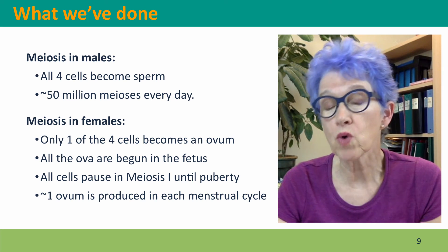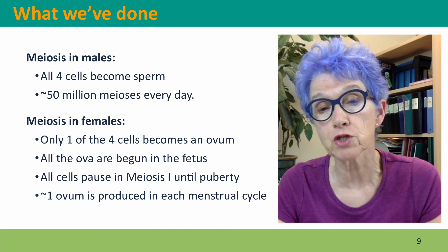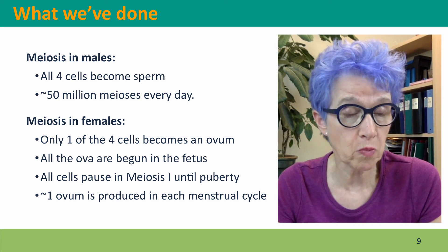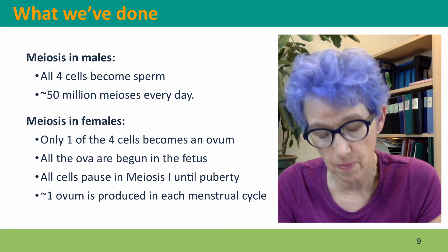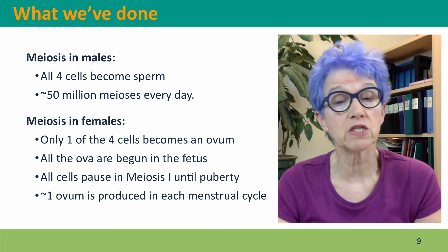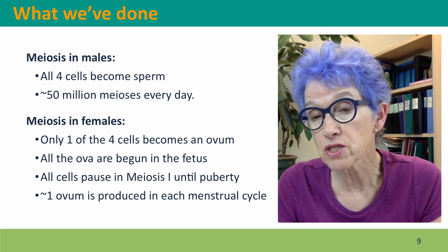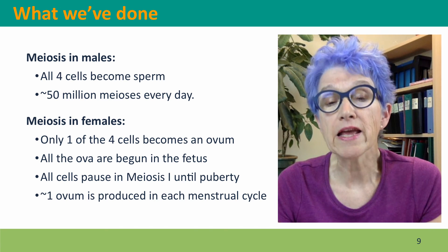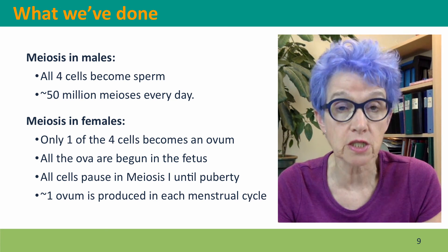So we've considered the differences in meiosis in males and females. There are differences of several kinds. First, what happens to the four cells meiosis produces: in males, all four become sperm; in females, only one is a true cell — the ovum — while the others are two small membrane-enclosed blebs called polar bodies containing the unwanted chromosomes. The timing also differs greatly: in males, meiosis begins at puberty and continues essentially for the lifespan, with perhaps 50 million meioses per day. In females, it begins earlier in the fetus, arrests, resumes at puberty one cell per month, and ceases at menopause.